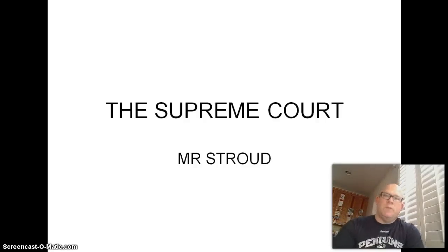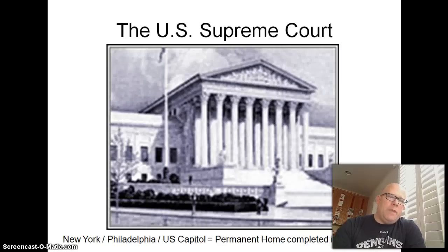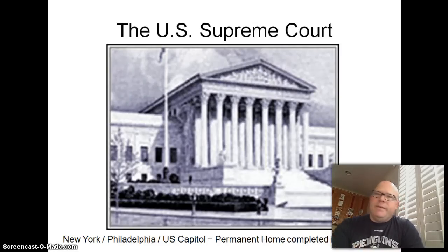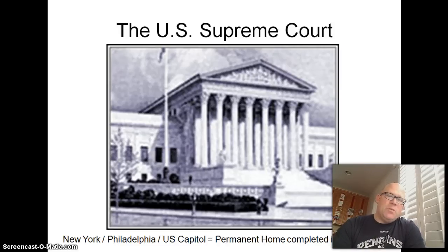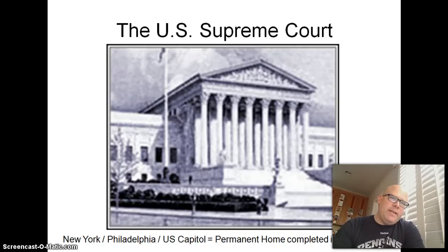Hello and welcome to Topic 1 of Chapter 16. Today we're going to be talking about the Supreme Court. You can see here on the screen a picture of the United States Supreme Court building, which is located in our nation's capital, only about a block away from the U.S. Capitol building. The Supreme Court did not have a permanent home through most of the early history of the United States and was only given a permanent home as late as 1935.